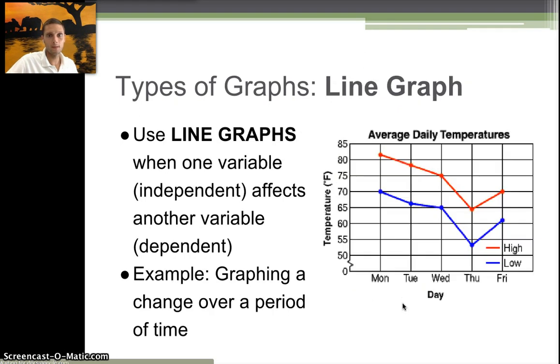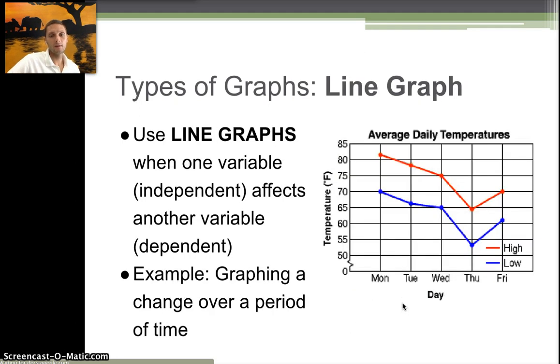The line graph is another type of graph we will use often in addition to the bar graph. We want to use a line graph when one variable, the independent, affects another variable, the dependent. In most cases, we're going to be graphing something over a period of time. In this case, we're looking at days in the week and we've recorded the temperature in degrees Fahrenheit over these days: Monday, Tuesday, Wednesday, Thursday, Friday. We can see the high and the low.